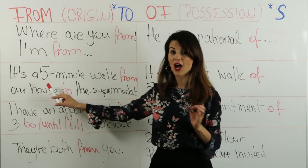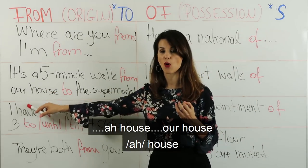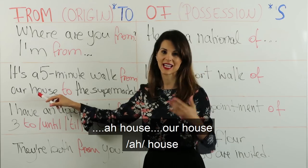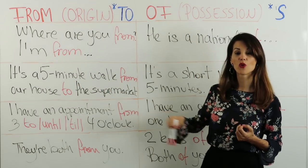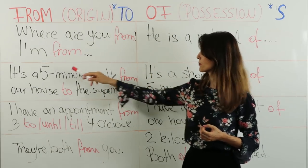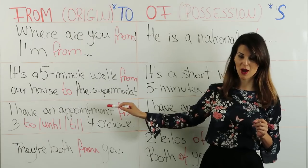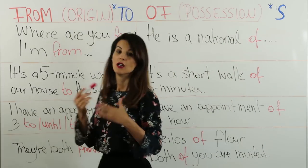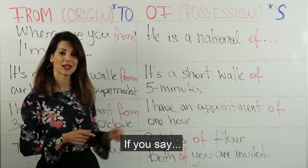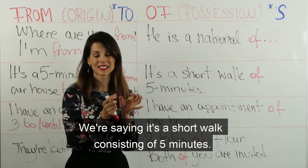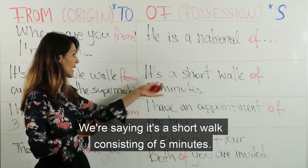'It's a five minute walk from our house to the supermarket.' هيدا مسافة من بيتنا للسوبرماركت. If you say 'it's a short walk of five minutes', we're saying it's a short walk consisting of five minutes. عم نقول إنه هو مشوار أصير مكون من خمس دقائق.